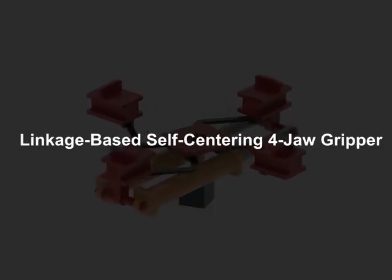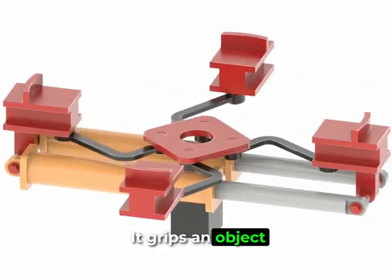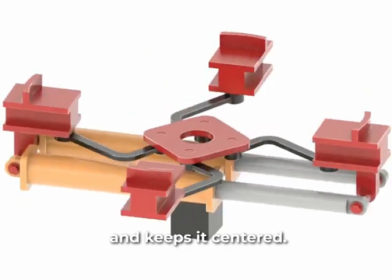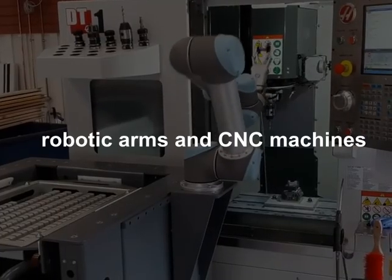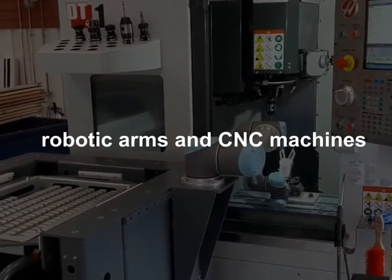Our third mechanism is the linkage-based self-centering four jaw gripper. It grips an object and keeps it centered. Linkages move all four jaws toward the middle together for a firm hold. You'll find it in robotic arms and CNC machines.